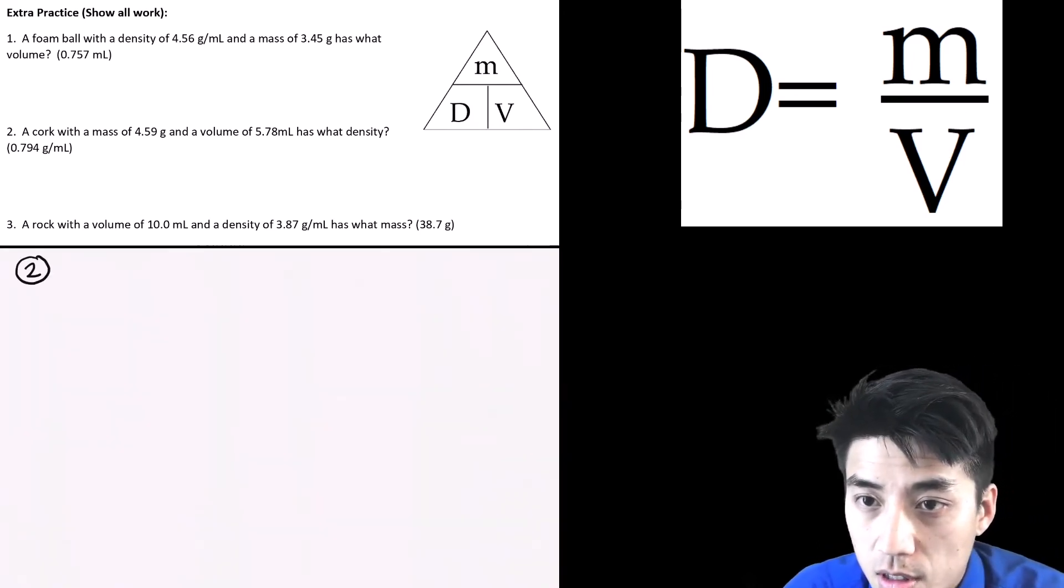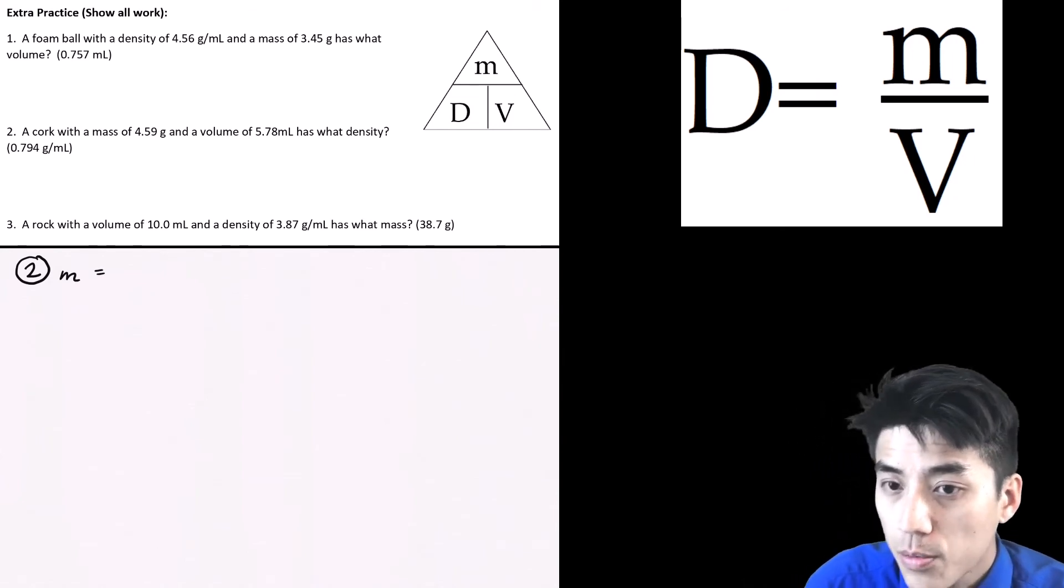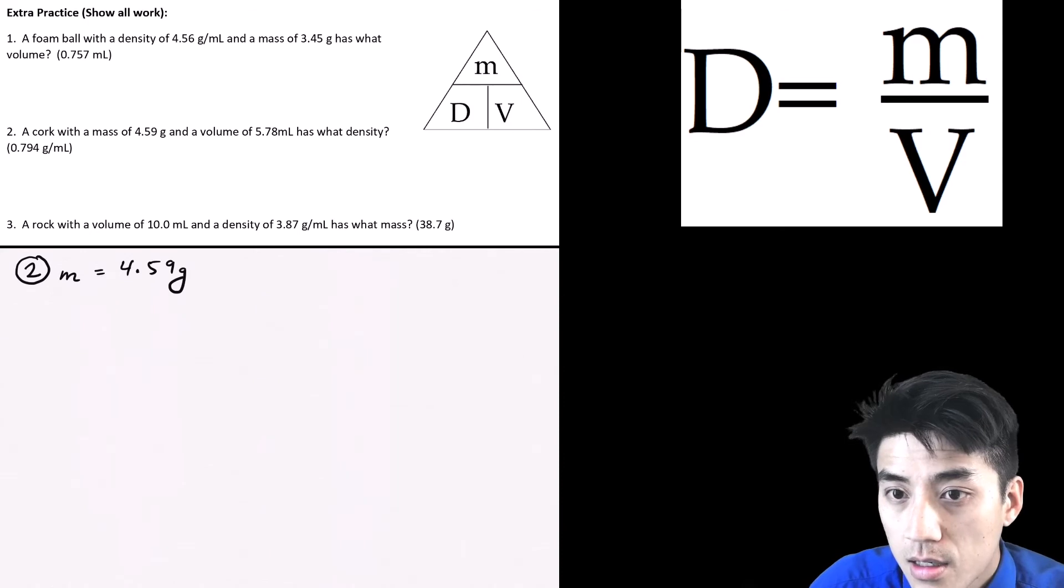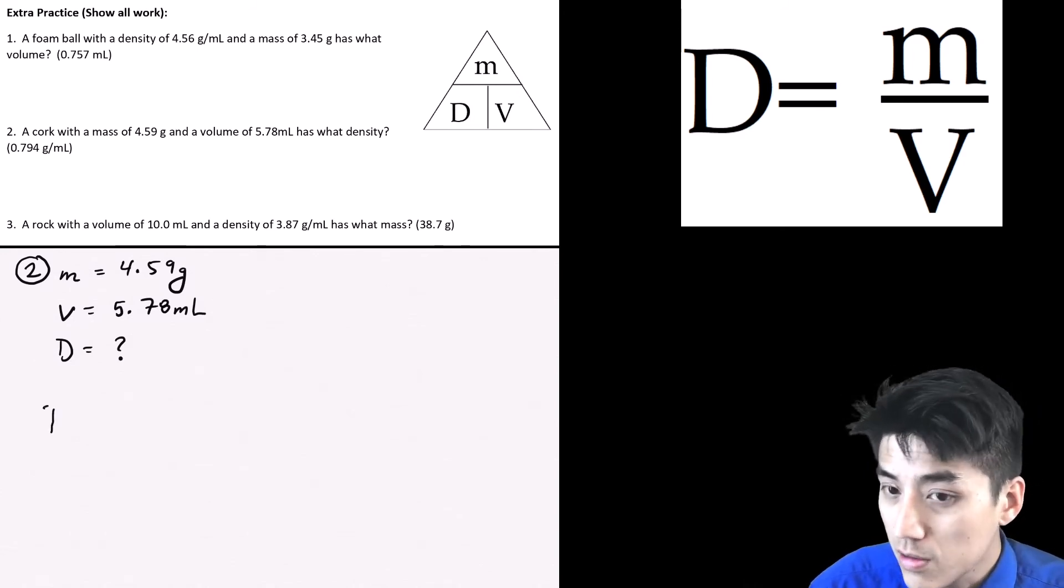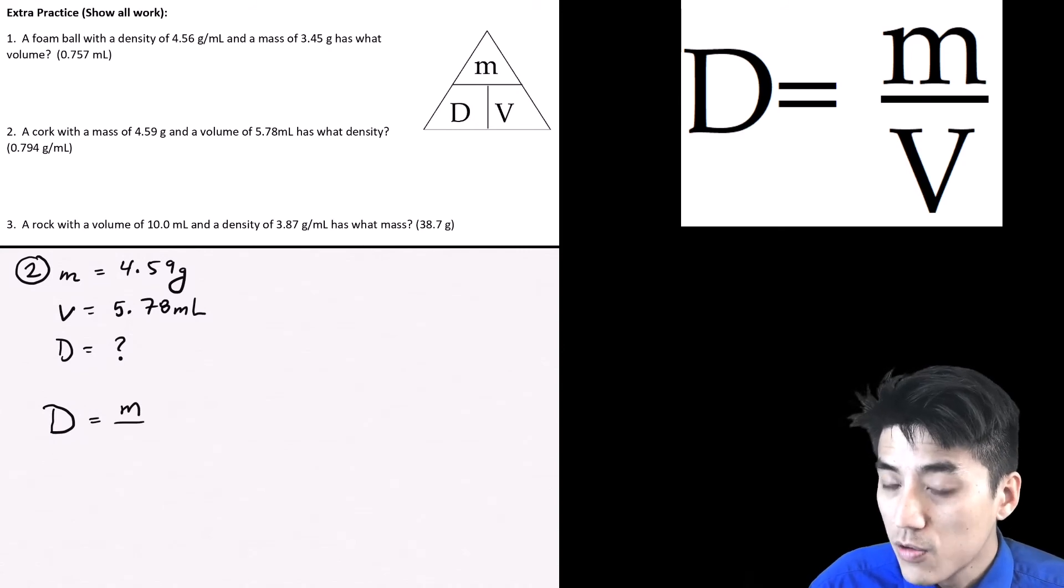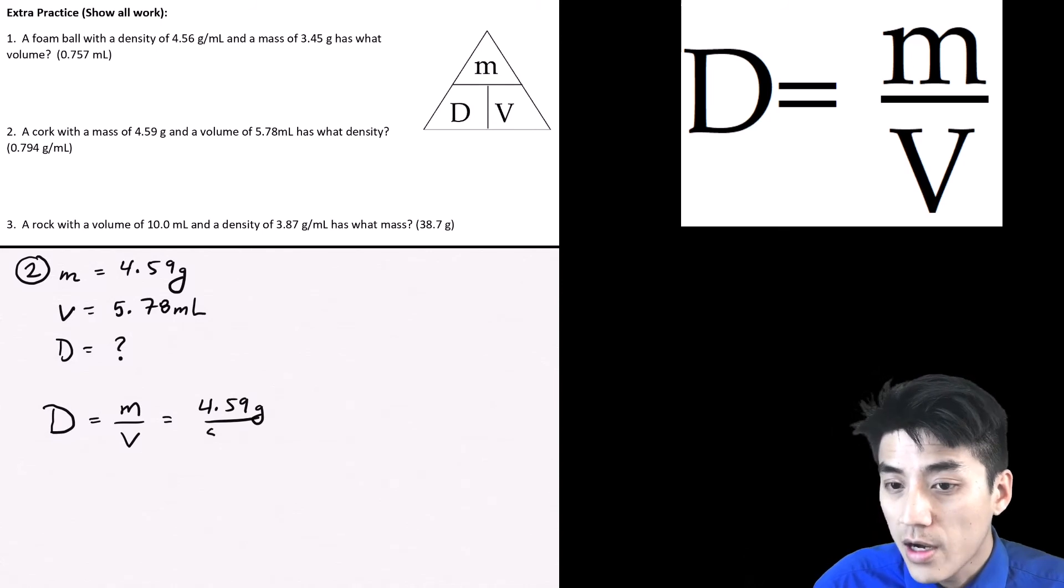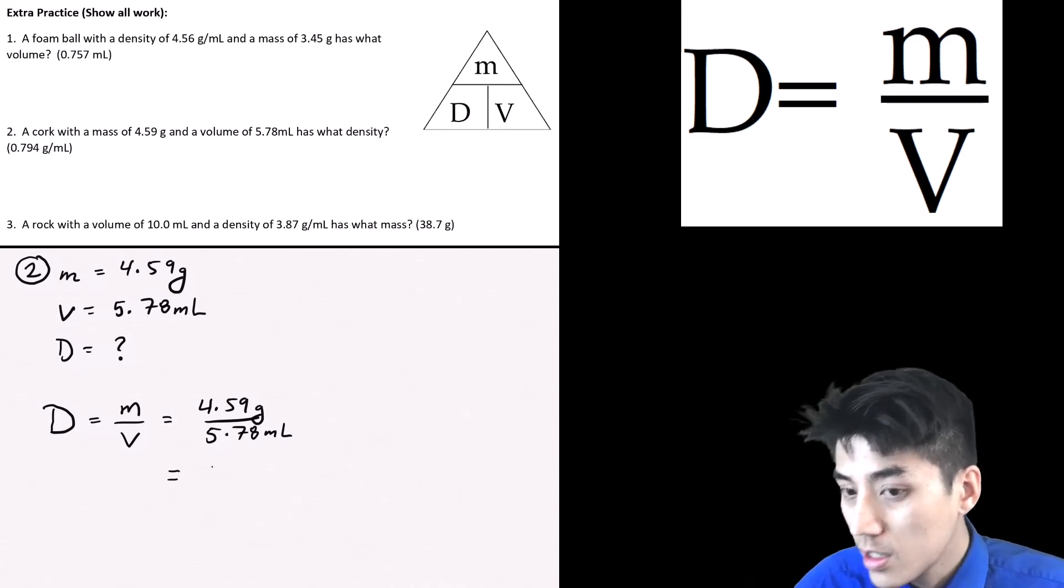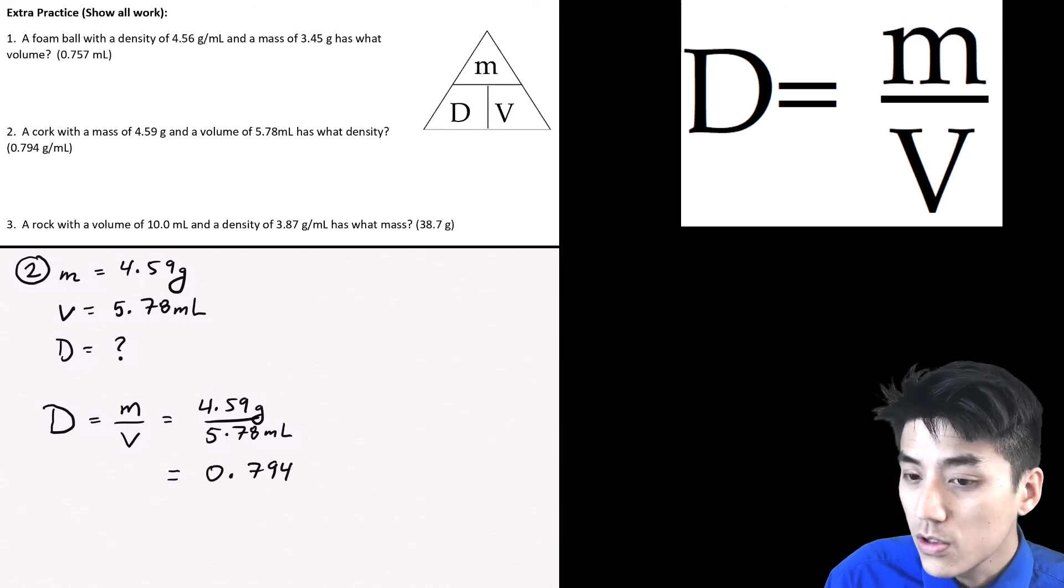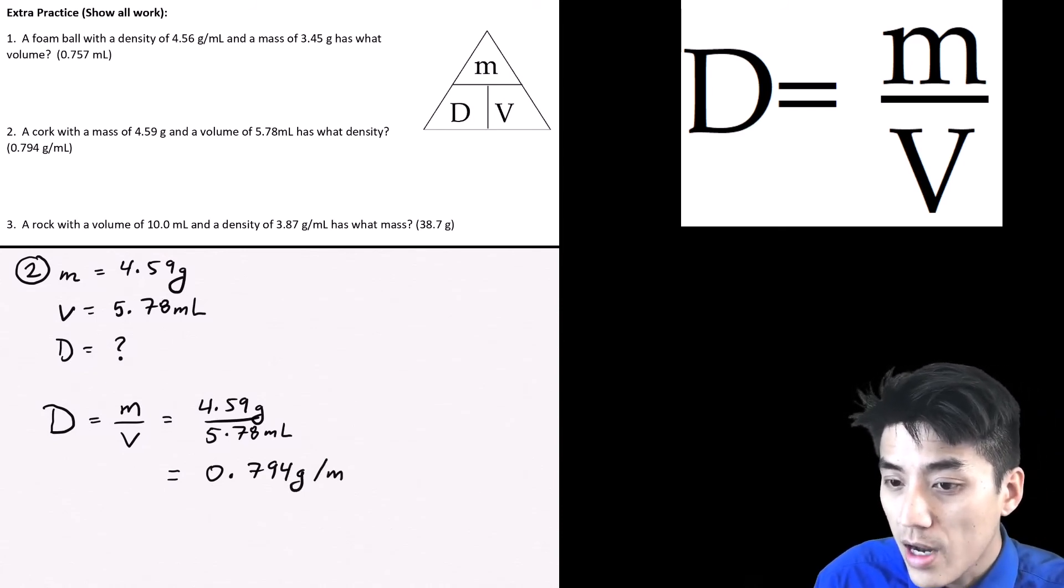In problem number two, you're given the mass of cork, which is 4.59 grams. So our volume is 5.78 milliliters. And now they're asking you to solve for the density. This one turns out to be a little bit more straightforward because the equation is there. You don't have to rearrange the equation. It's already in order. So D equals M over V. You're given both mass and volume, which makes it really easy. You just need to plug in at this point. So plug in for M, 4.59 grams. Plug in for V, volume, 5.78 milliliters. And you'll see here the units don't cancel out because you're being asked to solve for density, which is mass per unit volume. And our answer is 0.794 grams per milliliters.